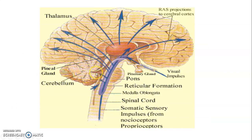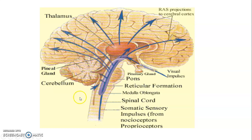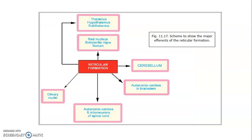Connections include pathways to the thalamus, cortex, cerebellum, tectum, and hypothalamus — the different connections of the reticular system.